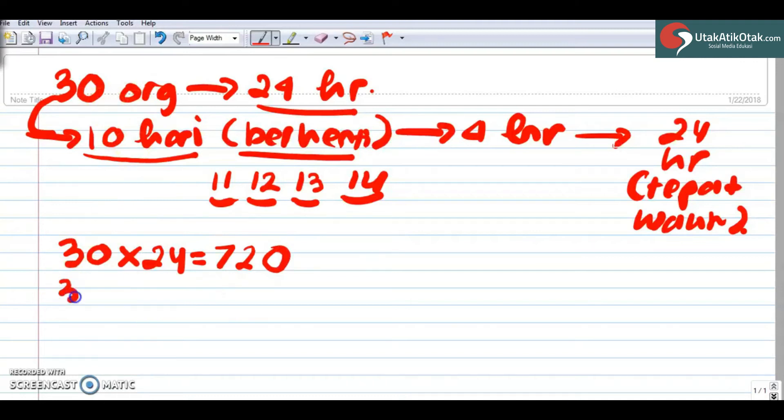30 orang dalam, ini maksudnya kan 30 orang dalam 24 hari mendapatkan 720. Karena sudah bekerja 10 hari, kita langsung tuliskan 30 kali 10 berarti 300. Coba kita kurangin. Nah, ini kan 420. Ya kan, 400, ini 0, 2, 4.